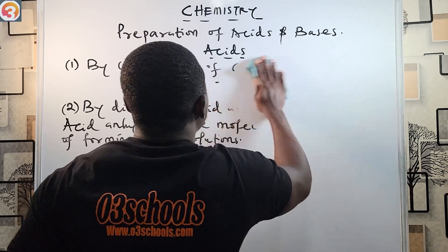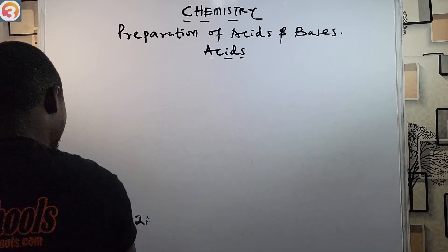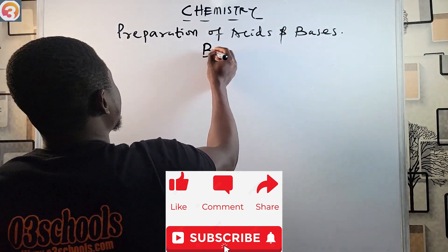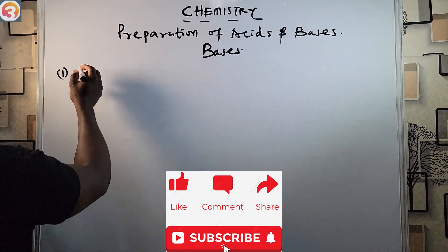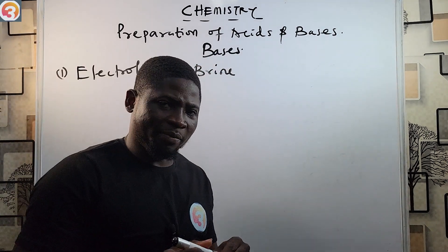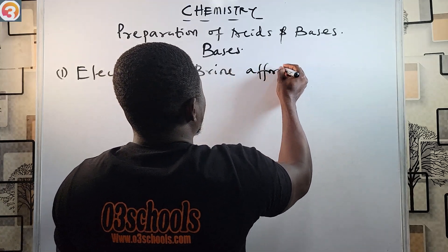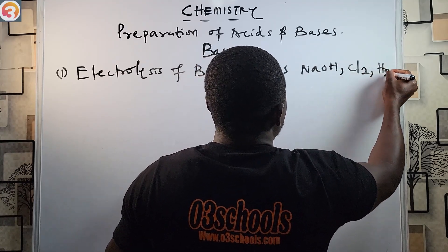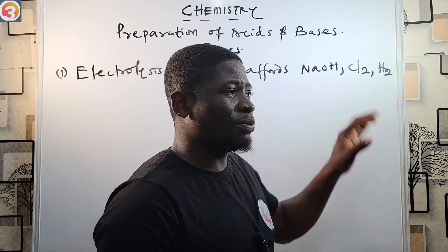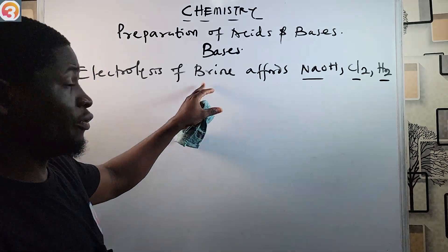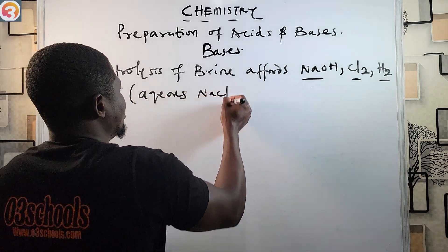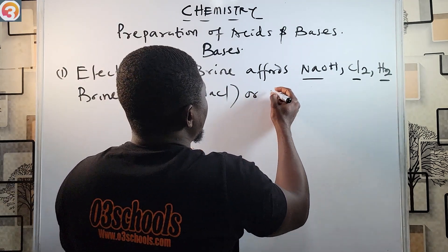Now let's look at bases. There is no single general method for preparing bases, but specific methods exist for some bases or alkalis. Number one: the electrolysis of brine. Electrolysis of brine affords three products: NaOH, Cl₂, and H₂ gas. Brine is aqueous NaCl — a concentrated solution of salt in water.